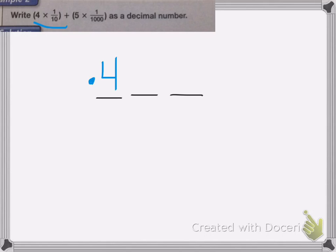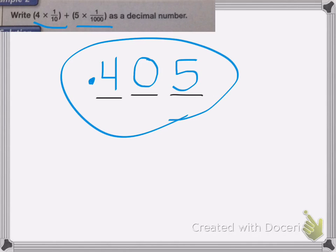Now with my next one, I don't have any hundredths. So that means I need to put a 0 placeholder in for my hundredths, because the next number is in the thousandths. 5 times 1 thousandth means that I put my 5 in the thousandths place. And that is the correct answer.